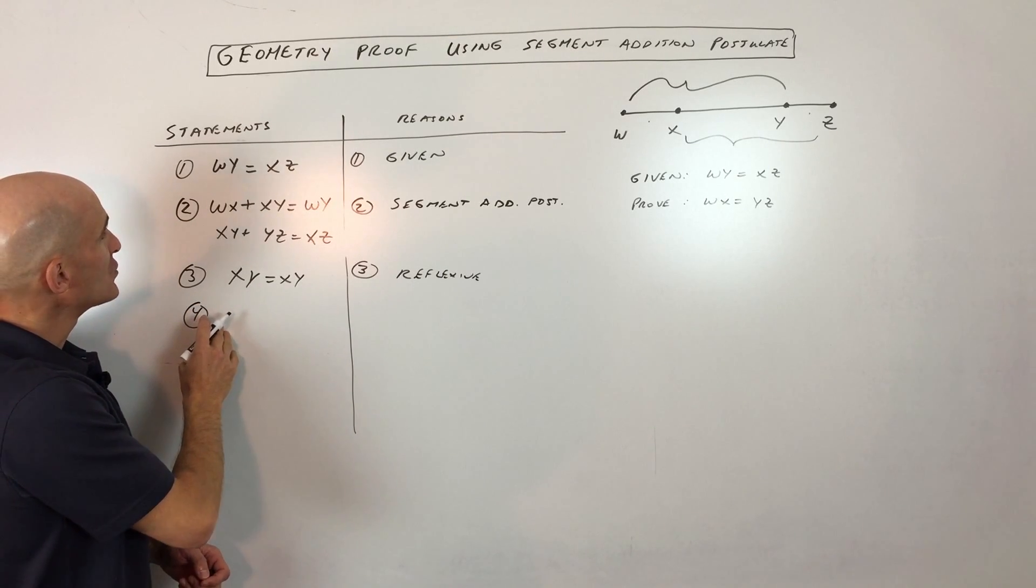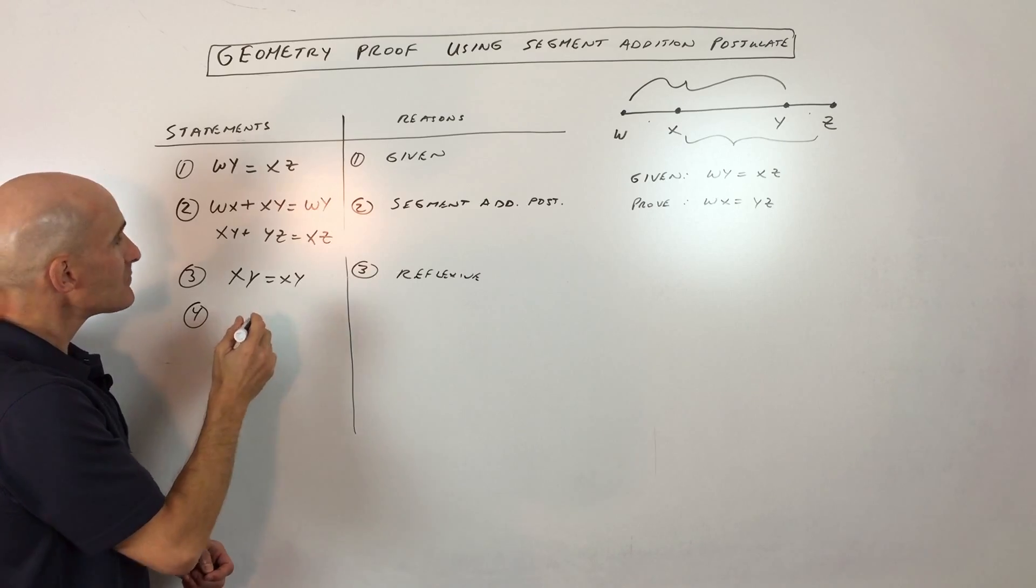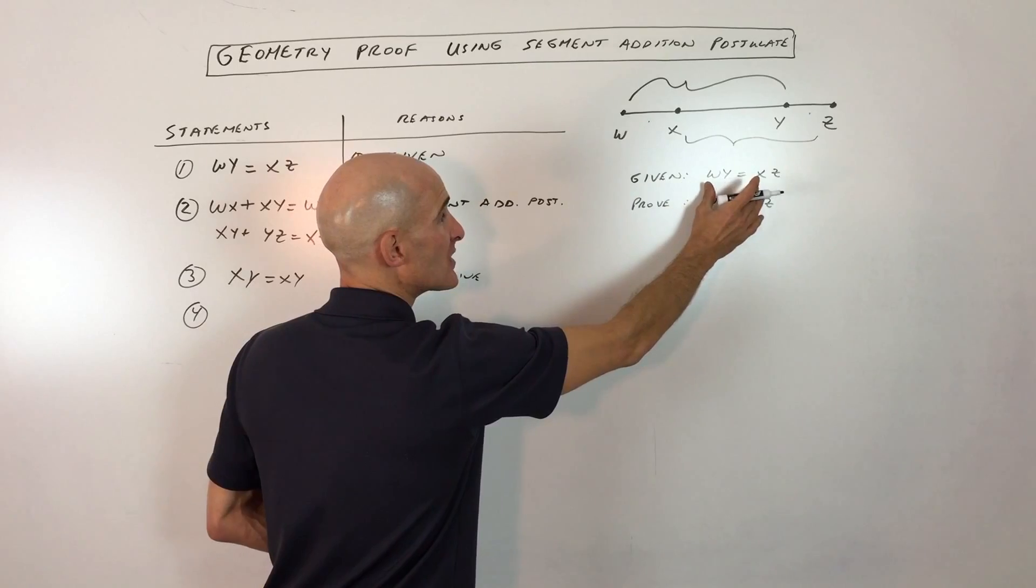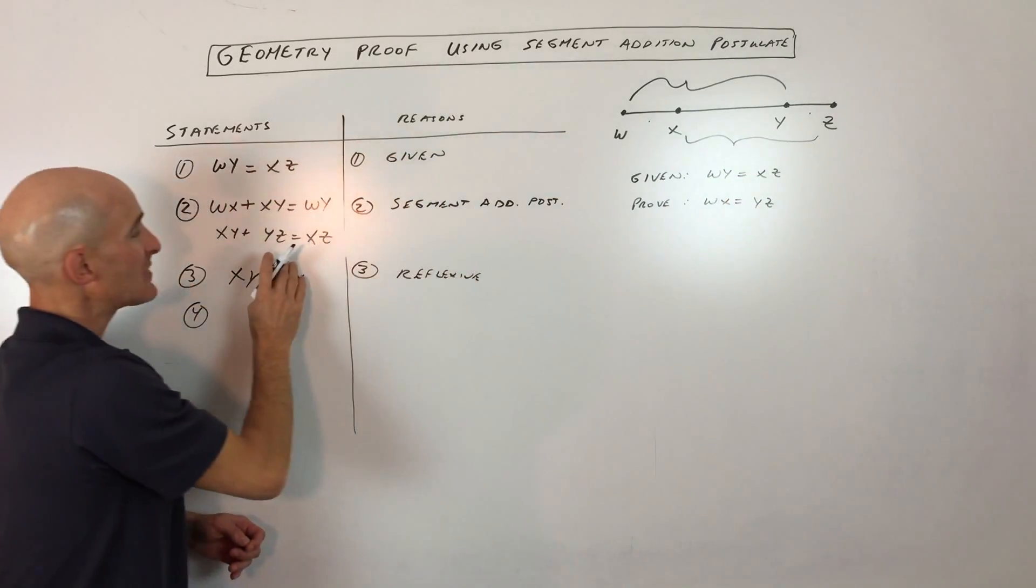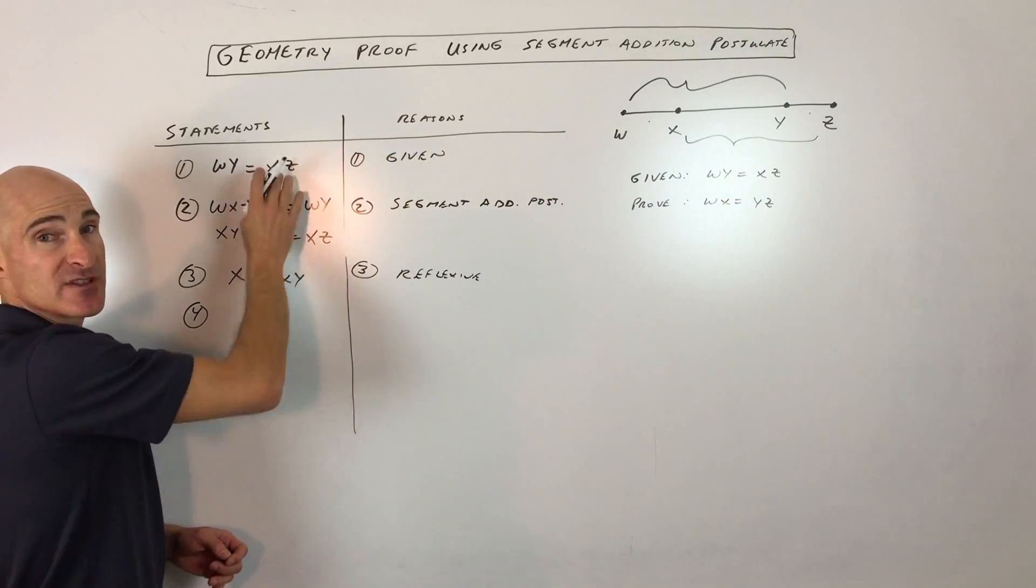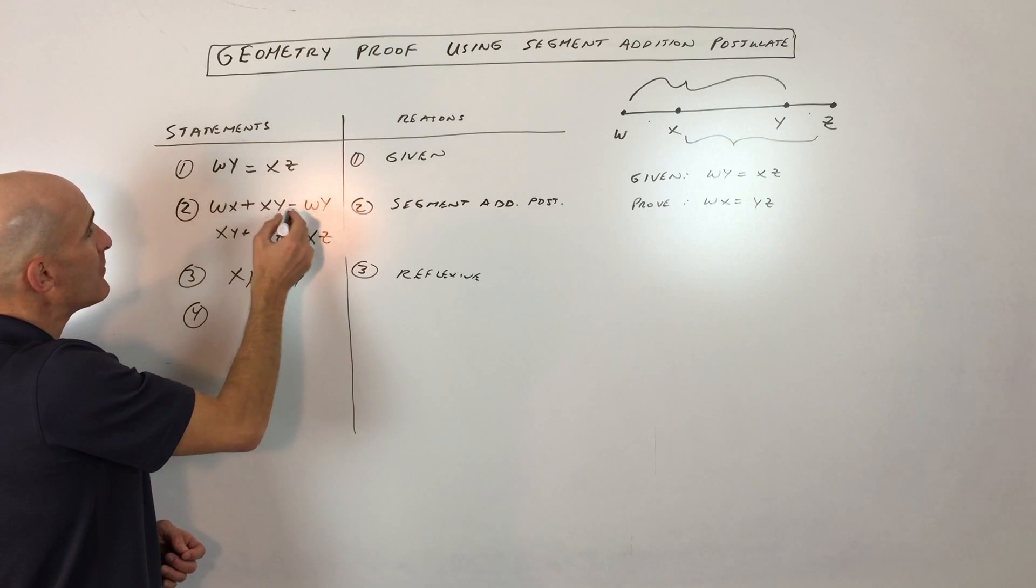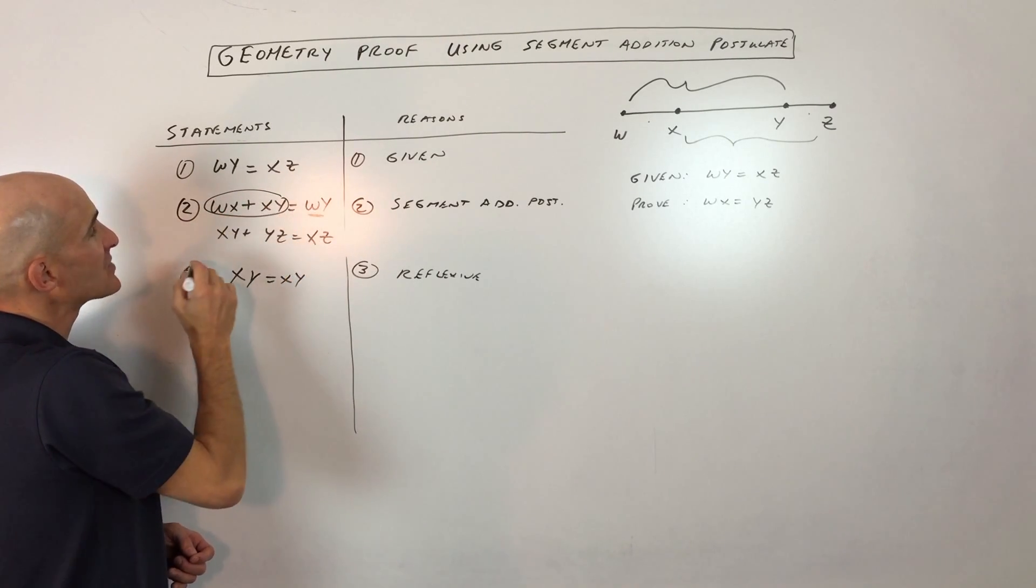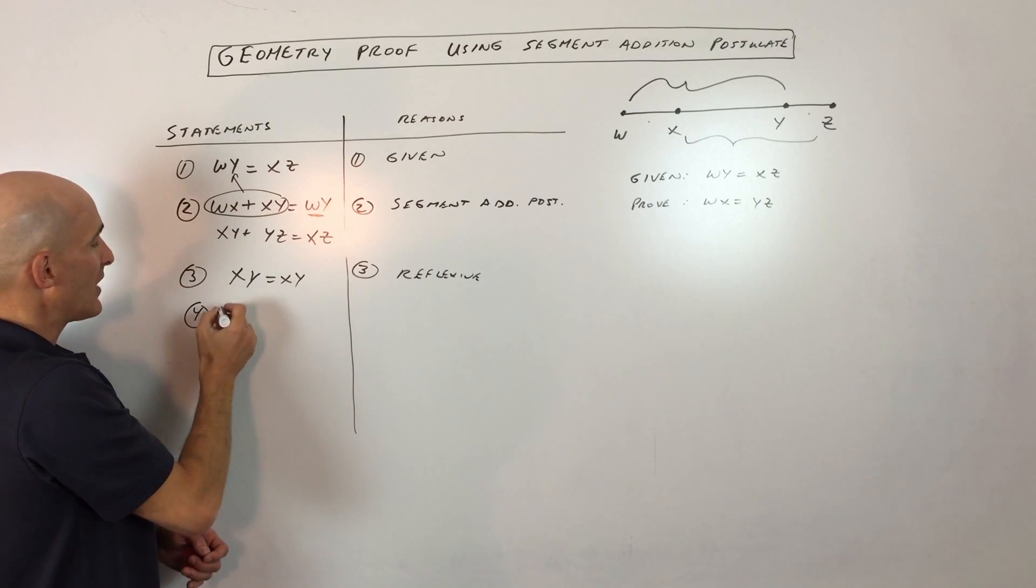And then step number four, what we're going to do is we're going to state that, and follow me on this one. So sometimes what we're doing is we're getting information from the diagram. Sometimes we're getting information from the givens. And then sometimes we're actually using previous steps in our proof. So, for example, here, WY, see how it equals WX plus XY? What I'm going to do is I'm going to put it right there.